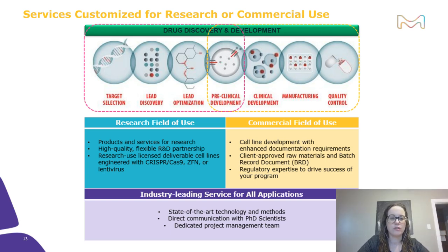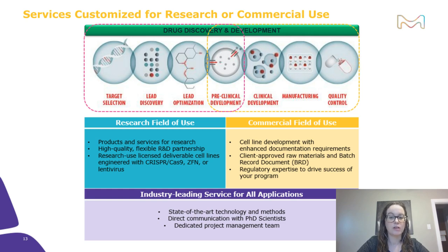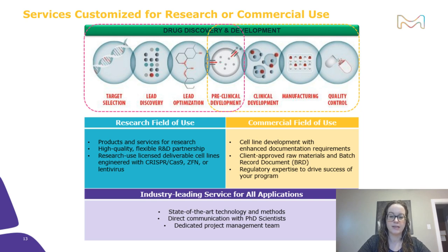Our services are customized for either research or commercial use. The research field of use offers high-quality, flexible R&D partnership with research-use-licensed cell lines engineered with CRISPR-Cas9, ZFN, or lentivirus, typically falling within early discovery and lead optimization. If your project is moving into pre-clinical and clinical development, manufacturing, or quality control, it falls under our commercial field of use — CDS Ultra — which involves enhanced documentation requirements. You as the client approve all raw materials and batch record documents, and we provide regulatory expertise. Both types use the same state-of-the-art technology, direct communication, and a dedicated project management team.